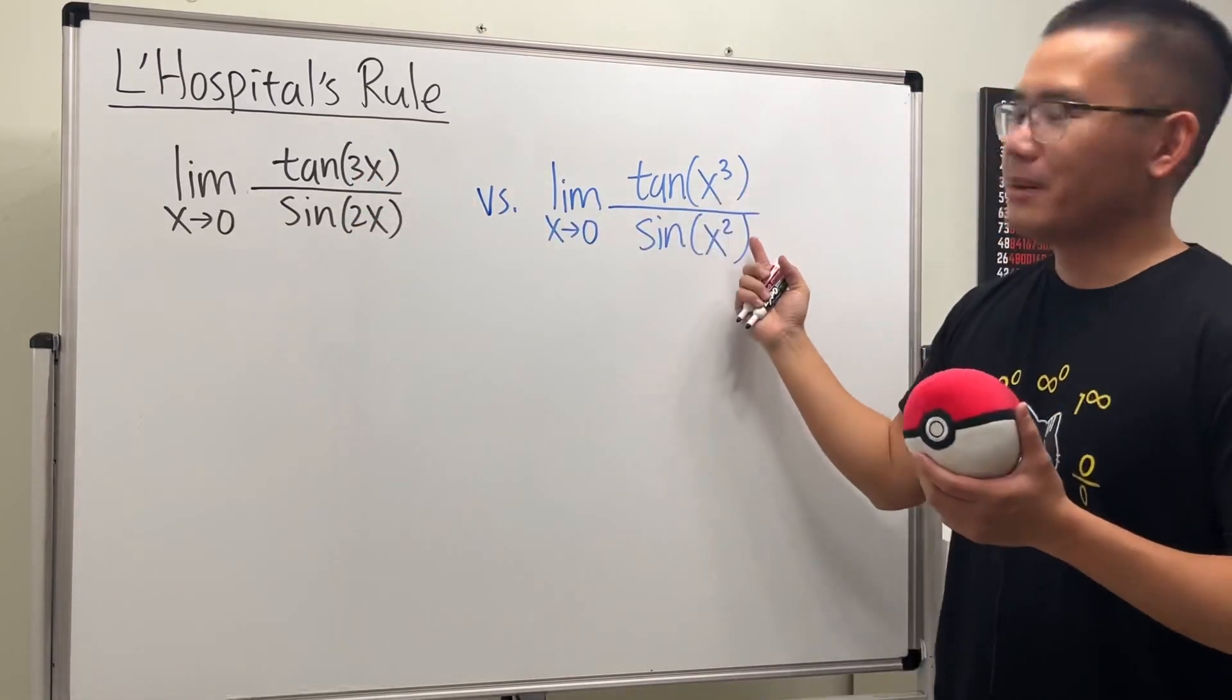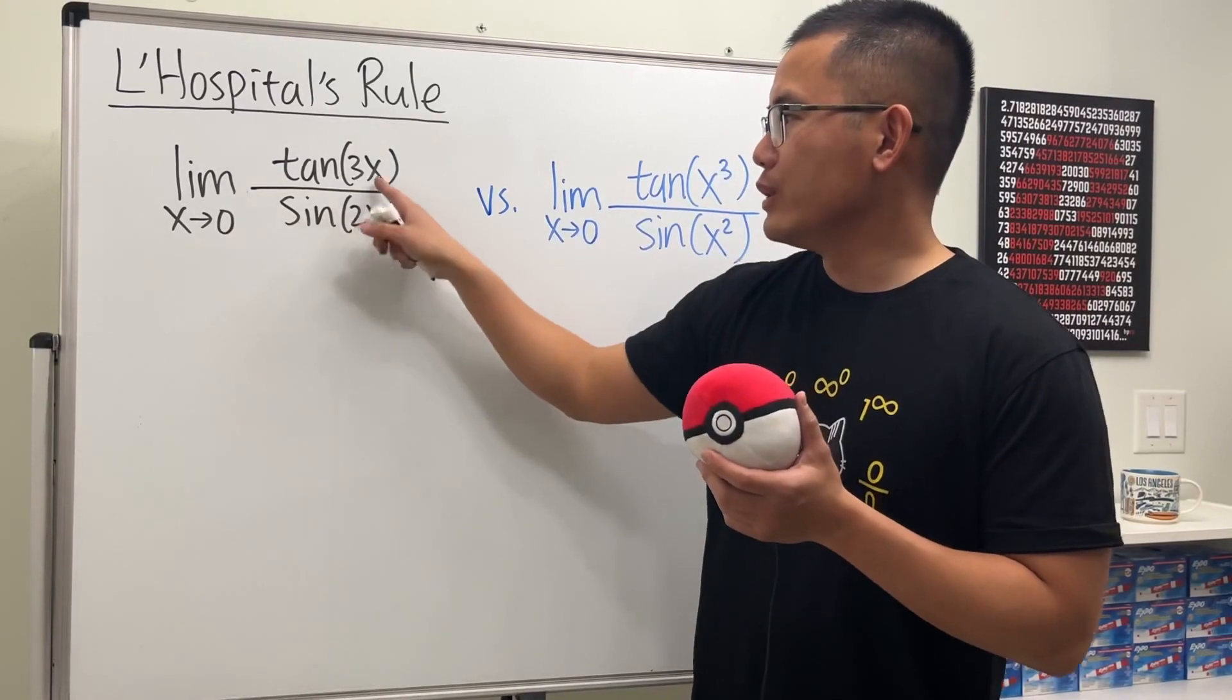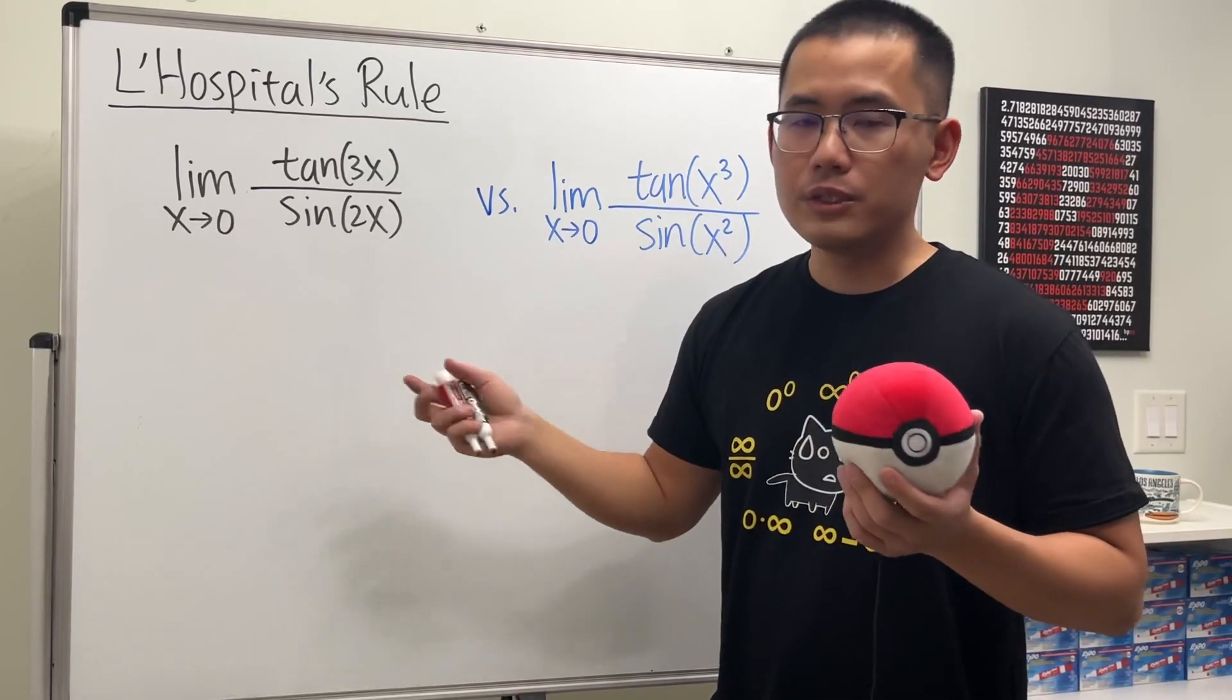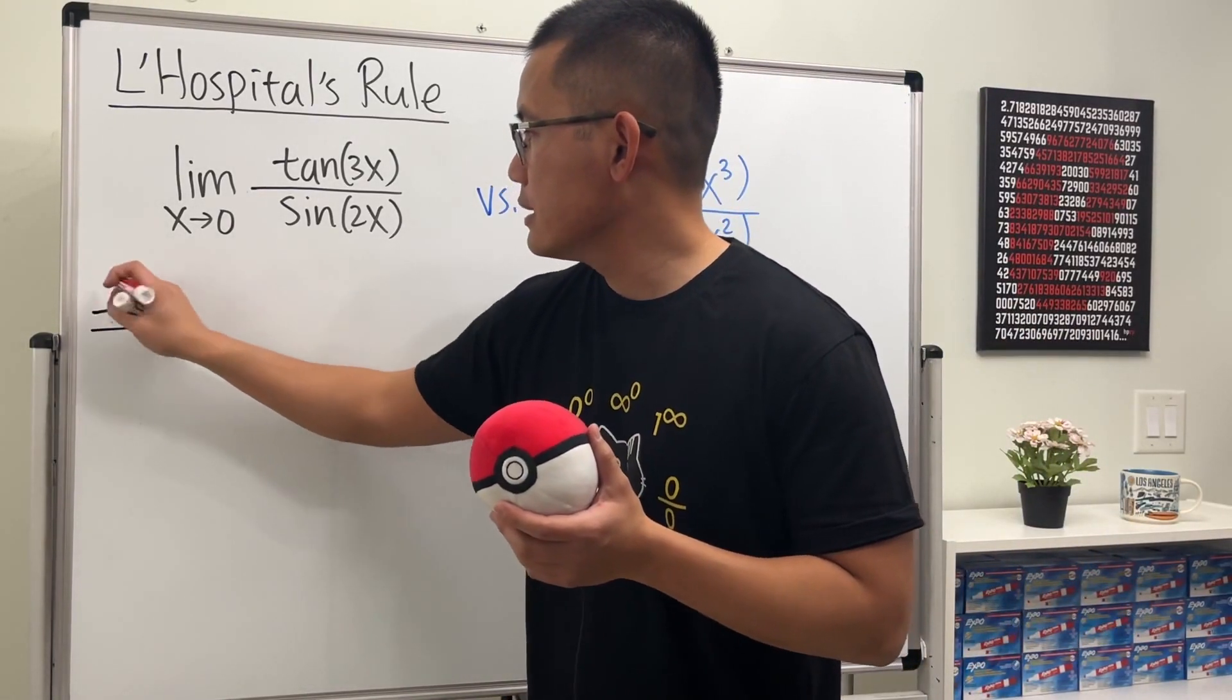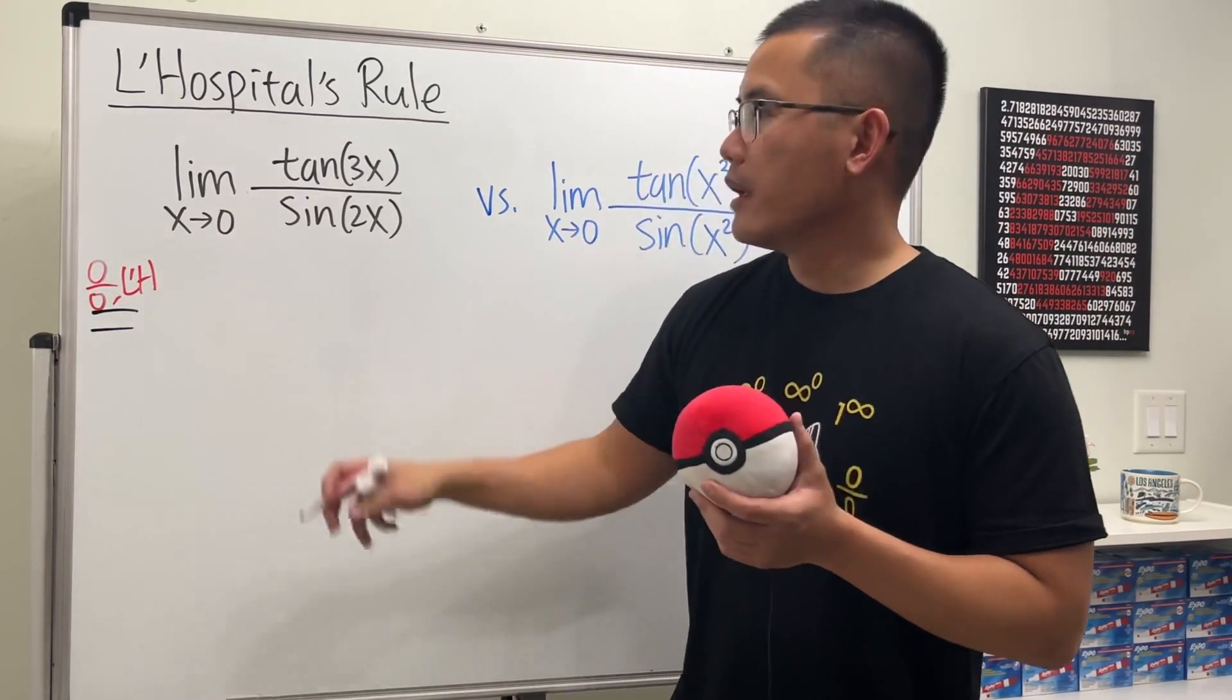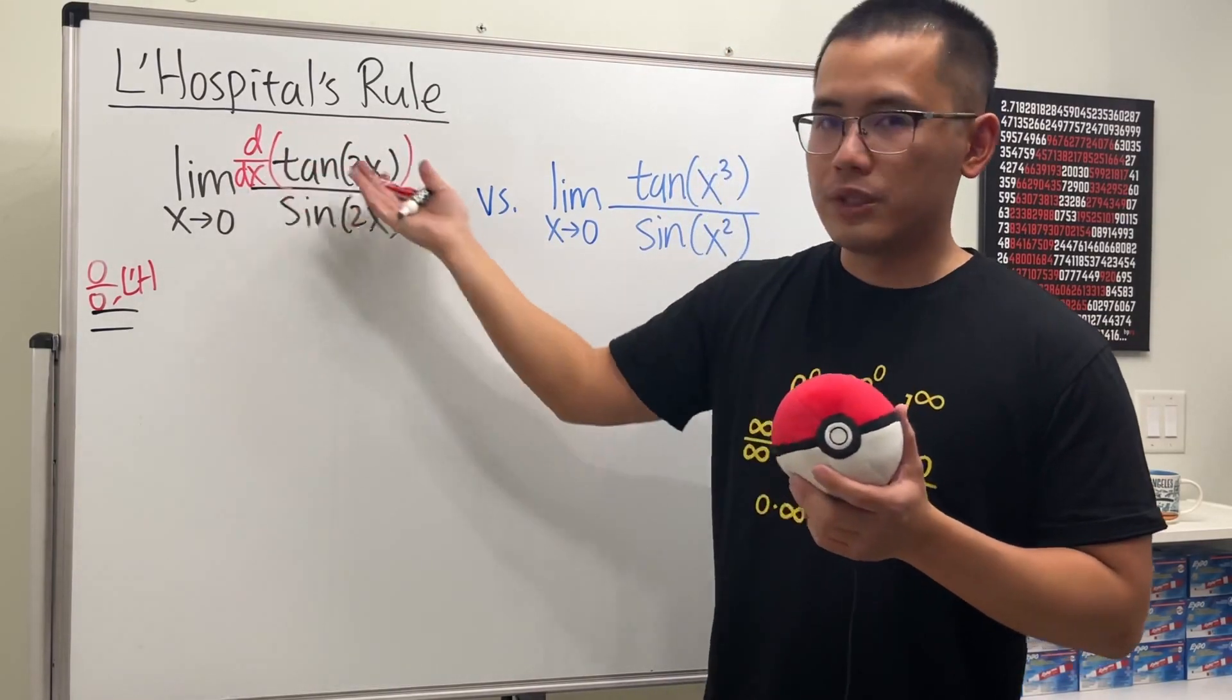Alright, so let's see. When we plug in zero into here and here, well, tangent of zero is zero, sine of zero is zero. So that's good news because we can use L'Hospital's Rule. So let me write that down right here for you guys. This is the zero over zero case. We can use L'Hospital's Rule, and right here let me just put down d/dx, means that we are going to differentiate the top and then we also differentiate the bottom.